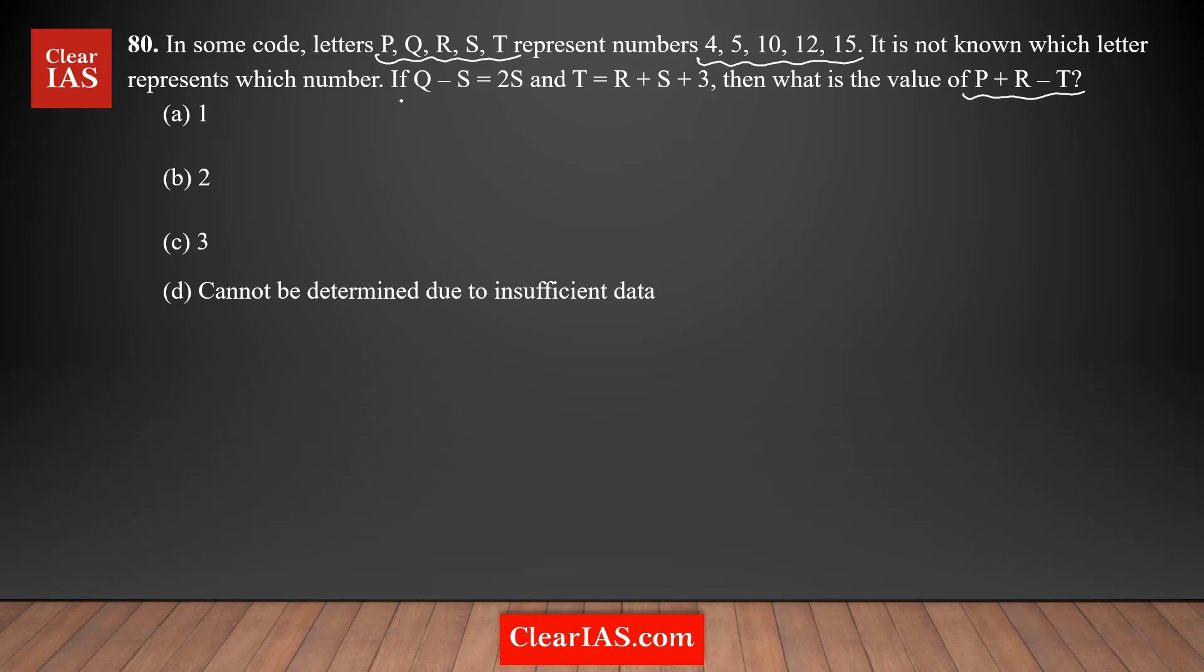Q minus S is equal to 2S. When you see the first equation, it's clearly evident that you can simplify it further because there is S on both sides. So I can rewrite this as Q is equal to 3 times S.